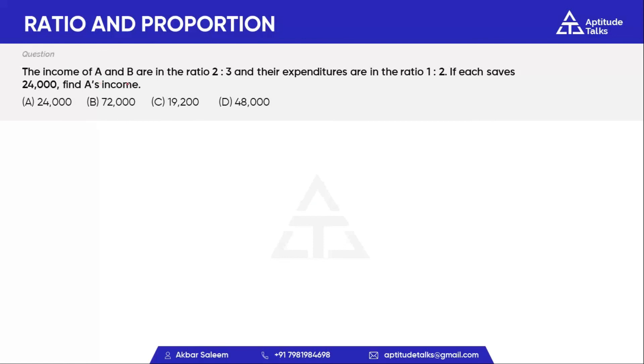The income of A and B is in the ratio of 2 to 3. Their expenditure is in the ratio of 1 to 2. Each saves a certain amount.